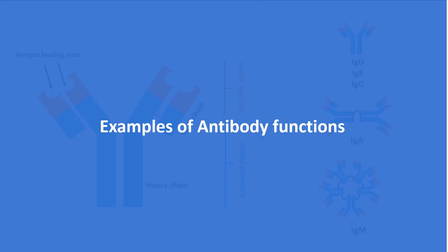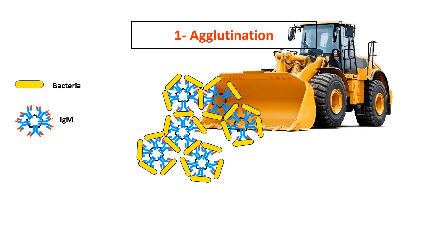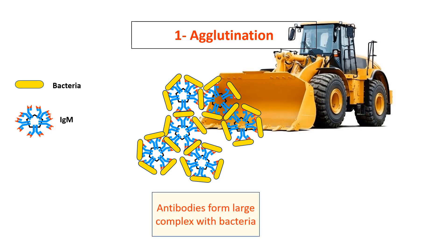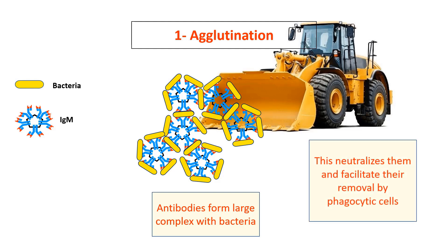Now we will have examples of antibody functions. Firstly, agglutination. Here, the antibodies form a large complex with bacteria. This complex neutralizes the bacteria and facilitates their removal by phagocytic cells.